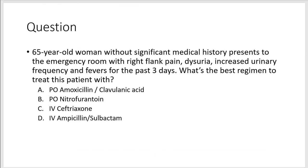Let's go back to the question: a 65-year-old woman without significant past medical history presents to the emergency room with right flank pain, dysuria, increased urinary frequency, and fevers for the past three days. What is the best regimen to treat this patient with? The correct answer is IV ceftriaxone. Patients in the hospital are mostly treated with IV if they are sick enough. Amoxicillin-clavulanic acid and ampicillin-sulbactam are pretty much the same medication in different formulations, and we don't need to treat this patient with anaerobic coverage. Nitrofurantoin does not penetrate the kidney that well.